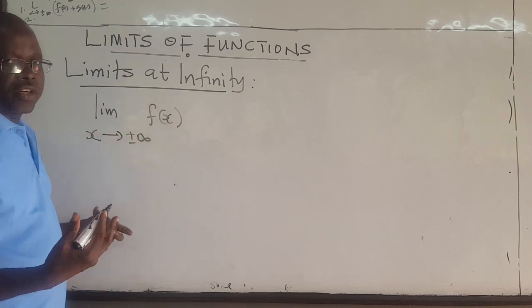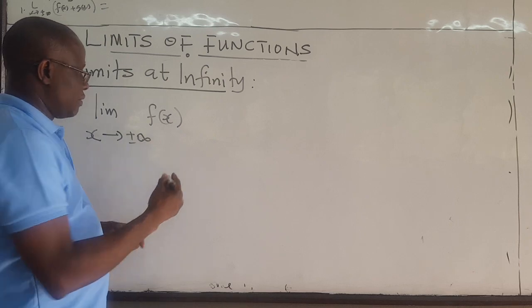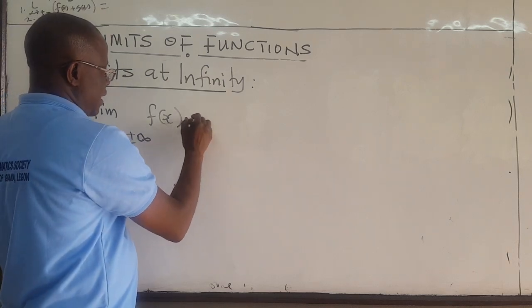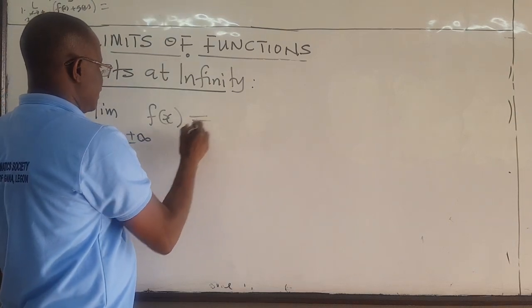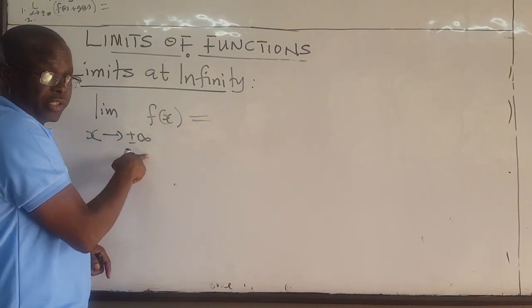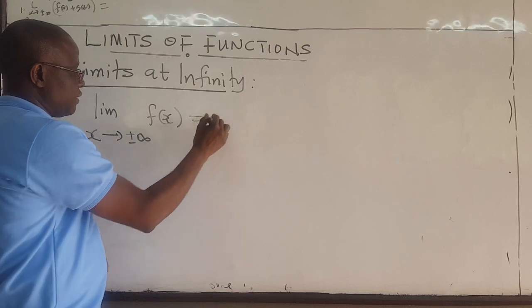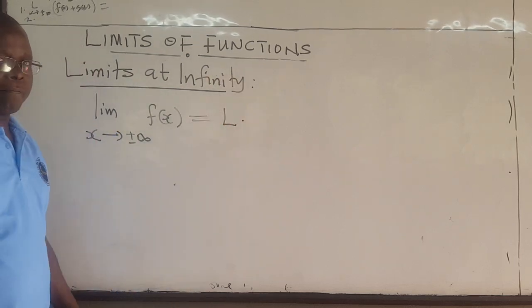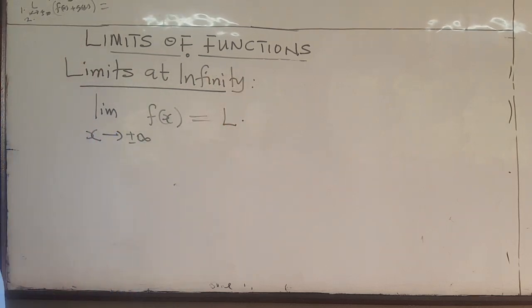Well, if this is equal to some number, a real number, let's say L, then we say that the limit as x approaches positive infinity or negative infinity is equal to that number, L.